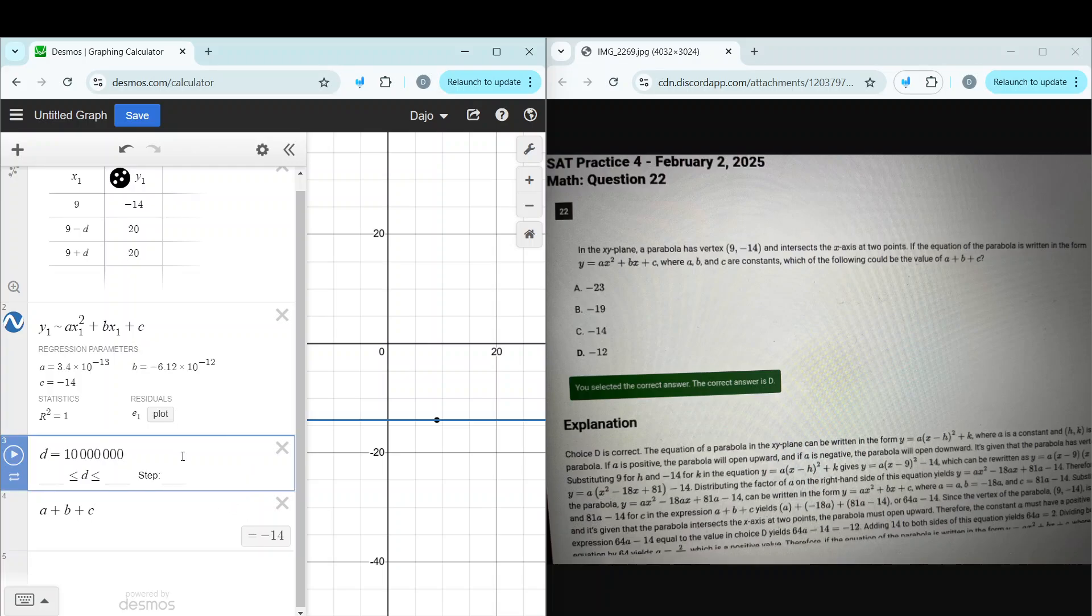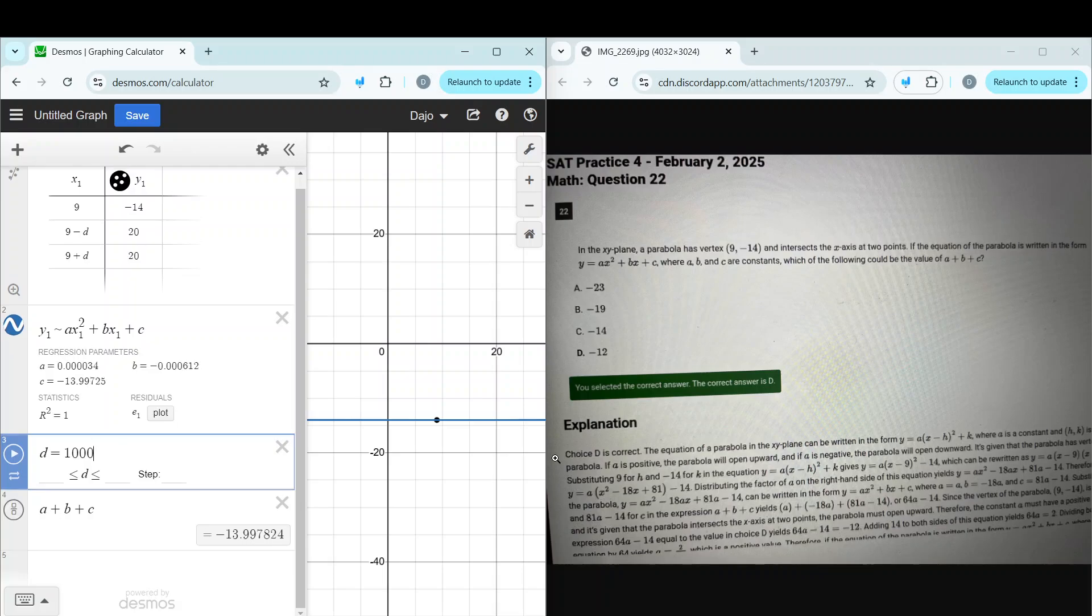So this doesn't actually ever approach -14. It's just rounding up because the value of -13.999999 repeating was high enough where Desmos rounded it up. So it's never actually approaching -14, which means the value has to be greater than -14. Because if we go back—right, 10, 11, 12, 13—these are all values greater than -14. So it can't be -14, and if it can't be less than -14, then that eliminates -19 and -23. Plus, your only answer left to choose is d, -12.